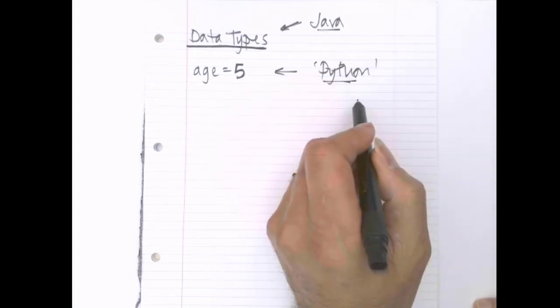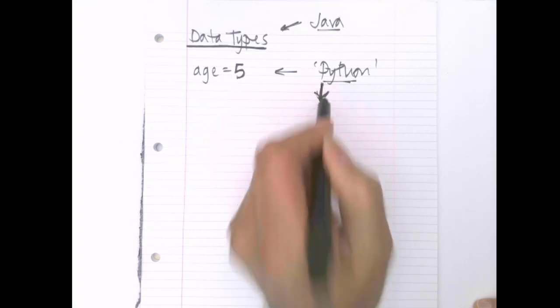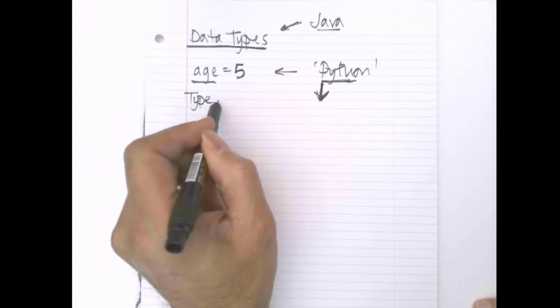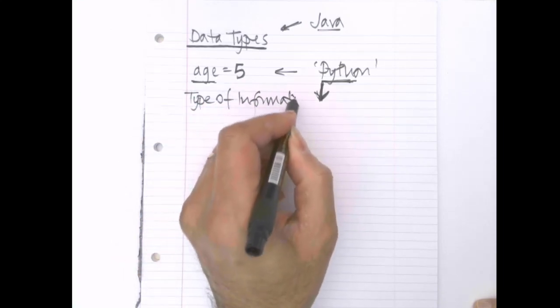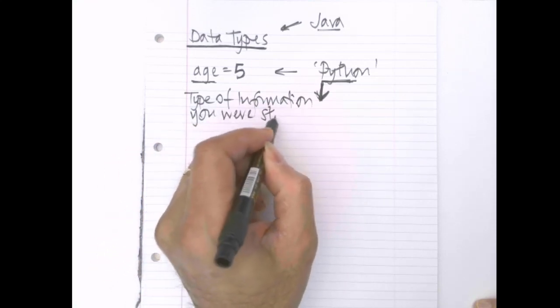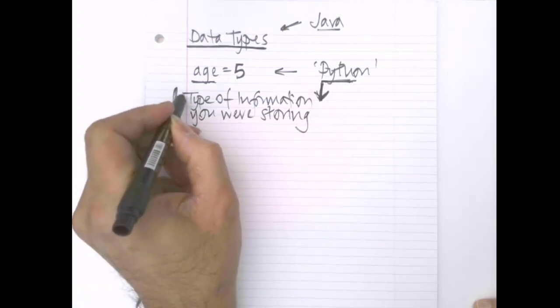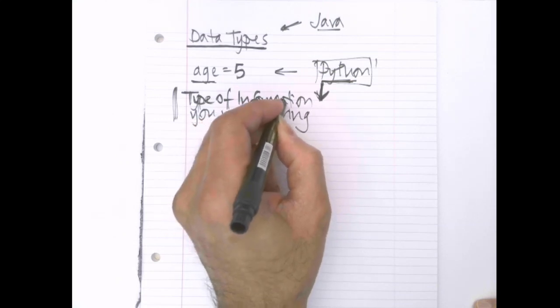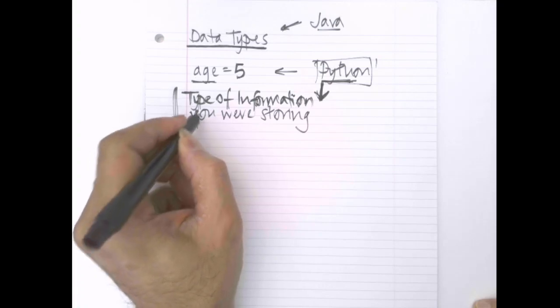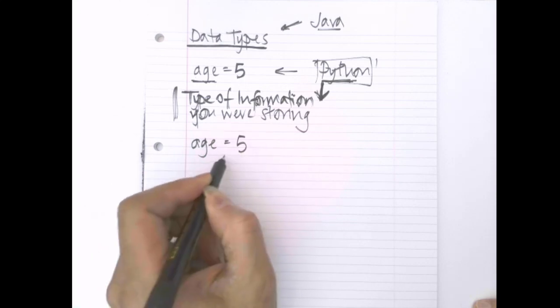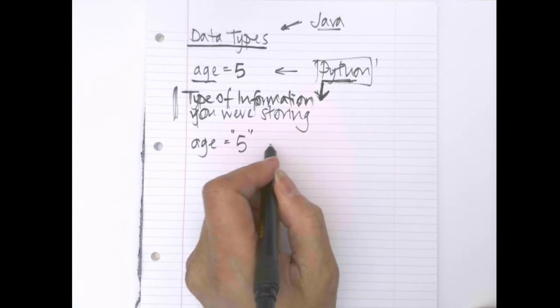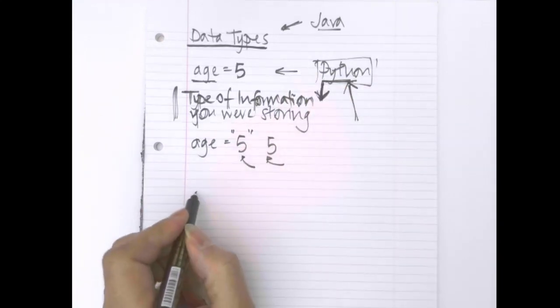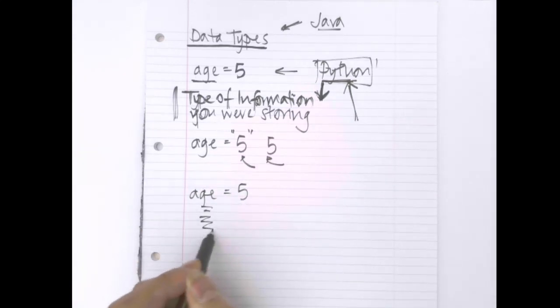One issue that you had with Python, however, is that Python did its work behind the scenes to make all of this happen for you. Python itself, the environment, had to decide what type of information you were storing. Some of the errors that you would have found in Python are because the environment, the Python environment, couldn't work out what type of information. Sometimes it just assumed that you were putting in a string. If you write age equals 5, there's no guarantee that you don't actually want the string version of it, rather than the number itself.